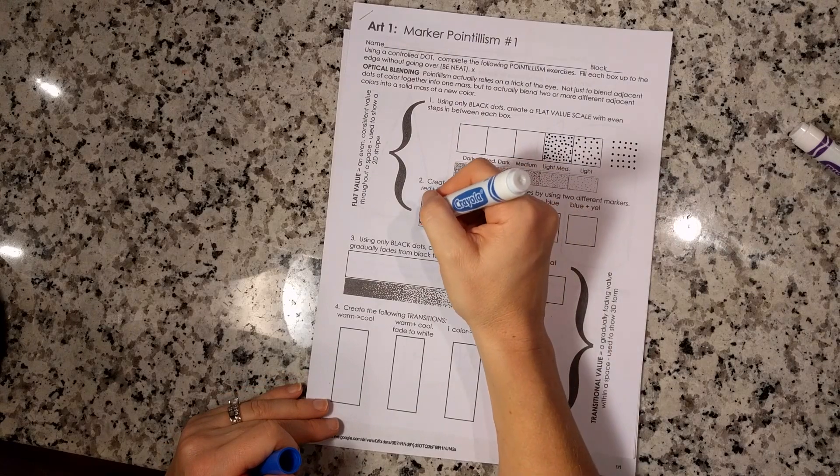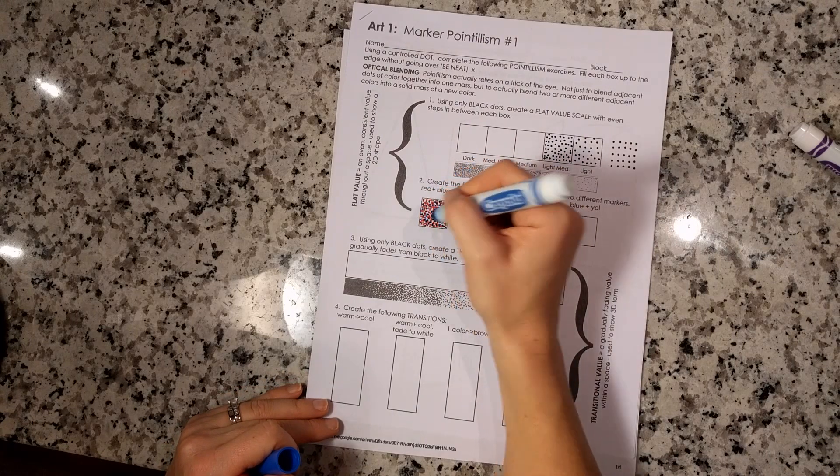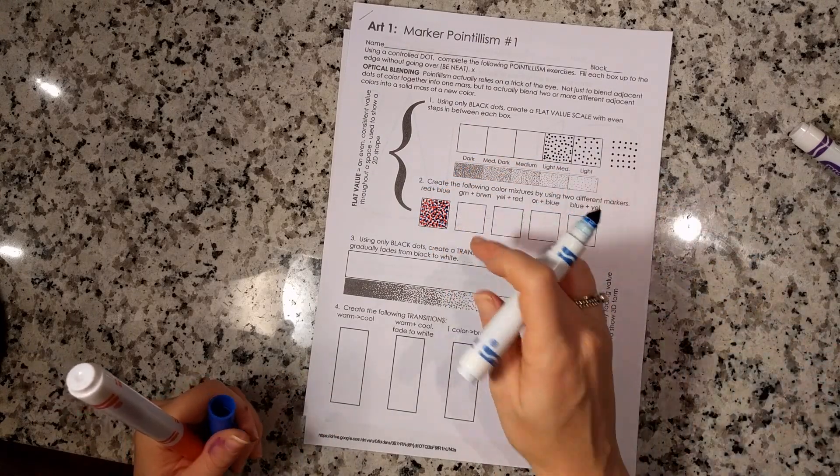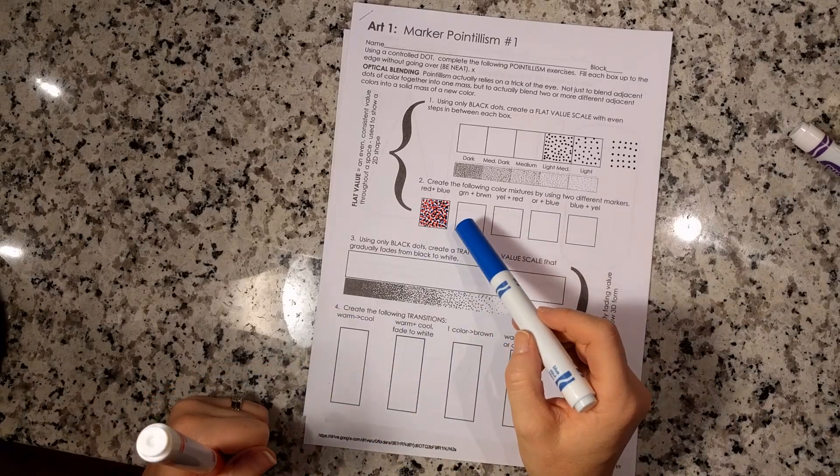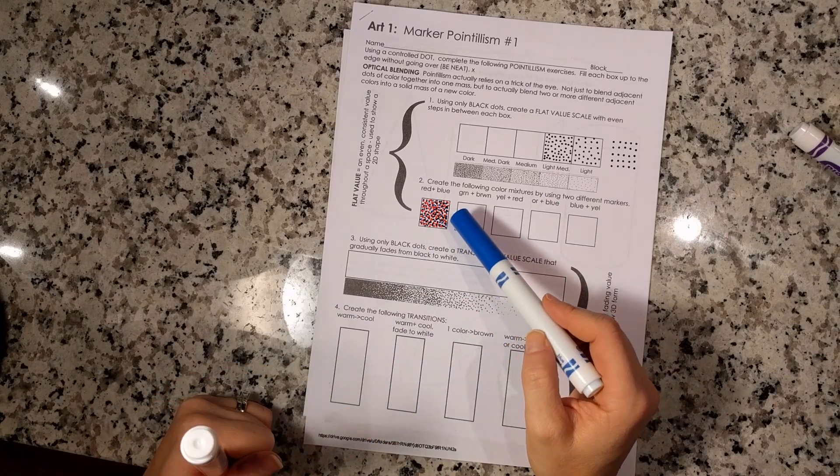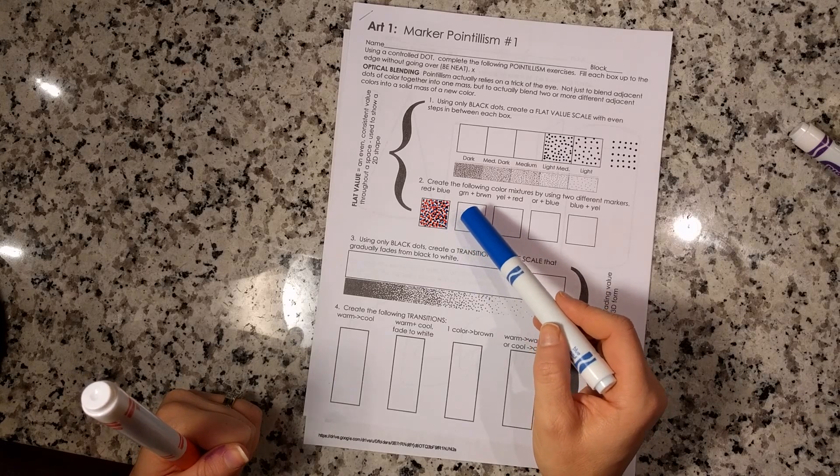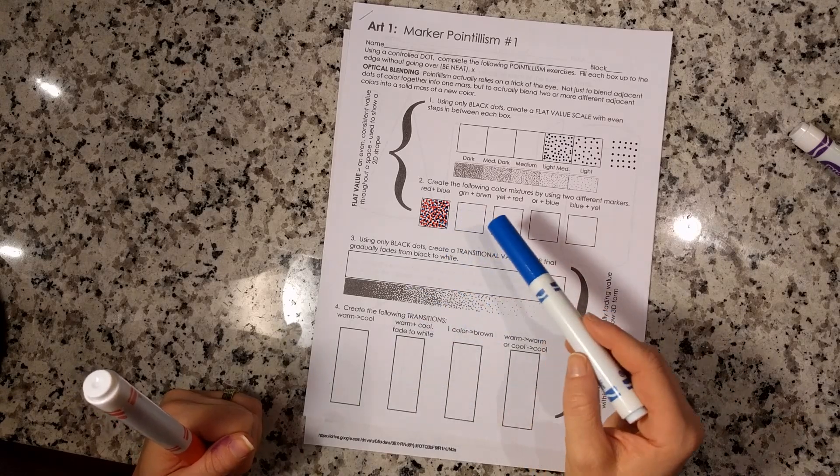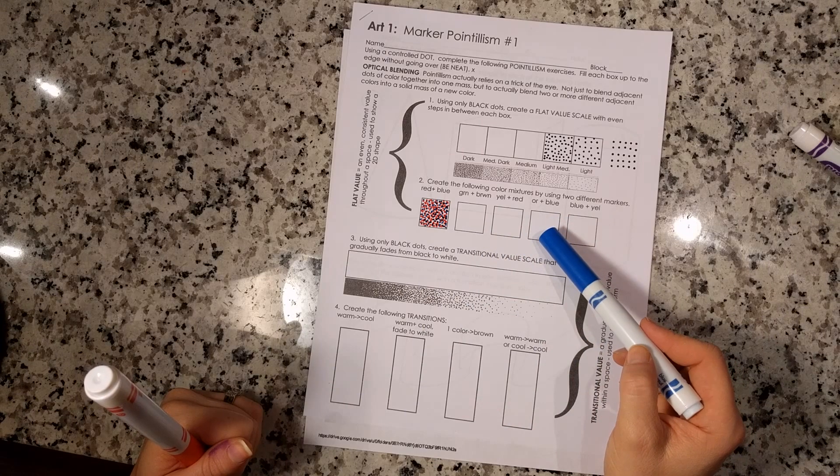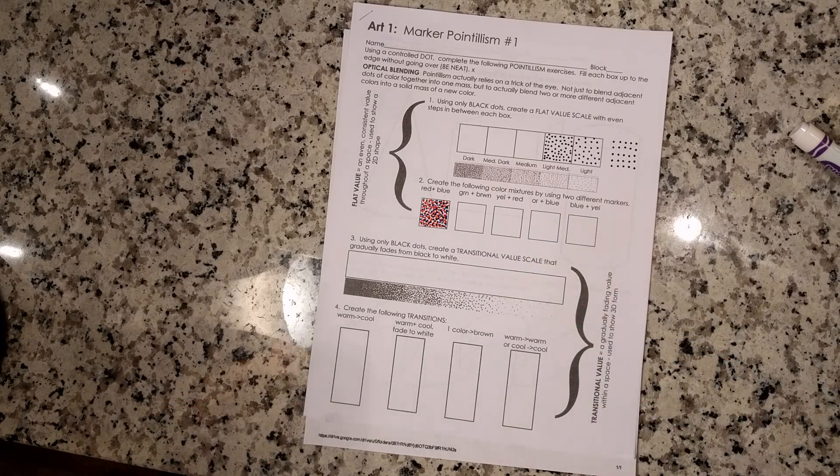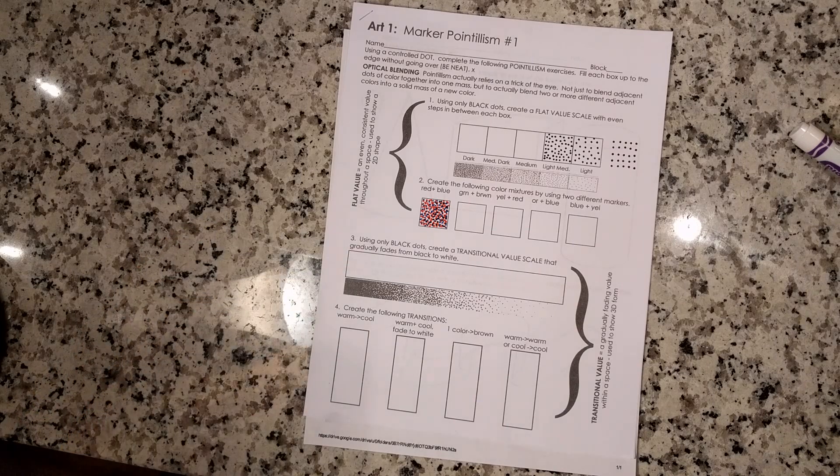Don't forget to get all the way up to the edges. I think I'm done with that one. Then I'm going to go on to the next one. Green and brown together. I'm going to put the lighter color down first, all the green and then brown in between. Move on to yellow and red, orange and blue, blue and yellow. Once I'm done with that, then it's time to look at the transitional values underneath.